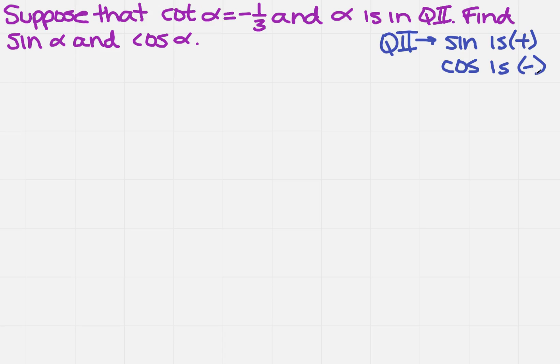So, I need to figure out how I can get sine and cosine if I have cotangent. What I'm going to need to do is find an identity that I know: the cosecant squared of x equals 1 plus the cotangent squared of x.